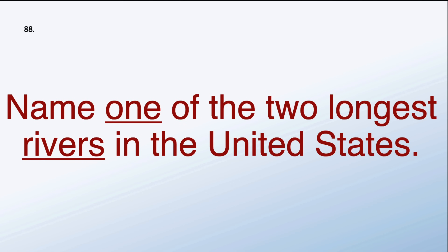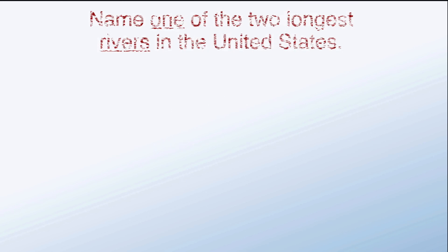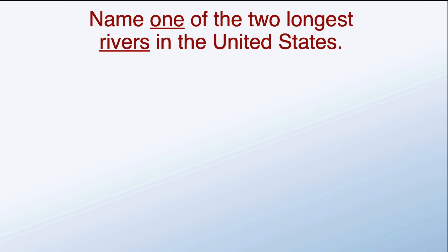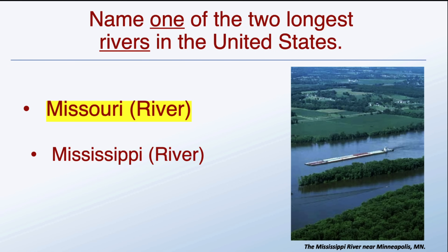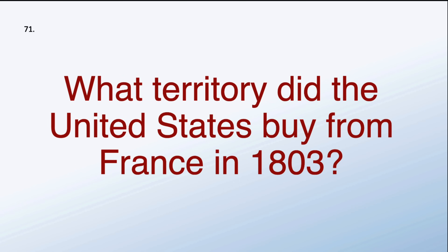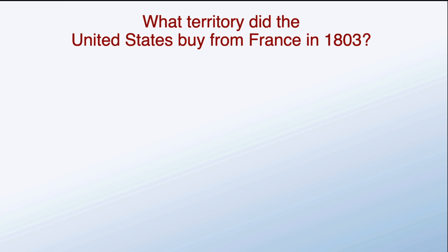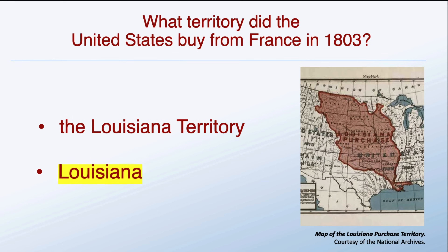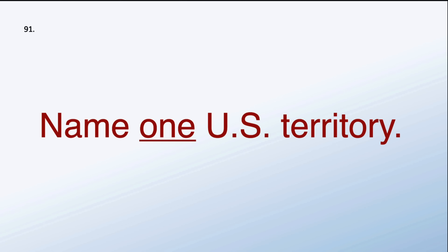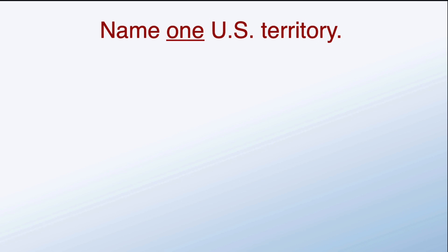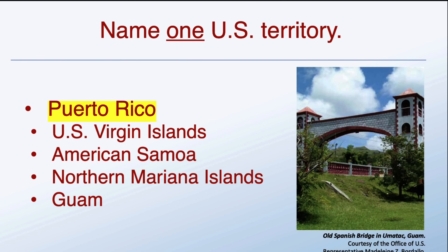Name one of the two longest rivers in the United States: the Missouri River or the Mississippi River. What territory did the United States buy from France in 1803? Louisiana. Name one US territory: Puerto Rico.